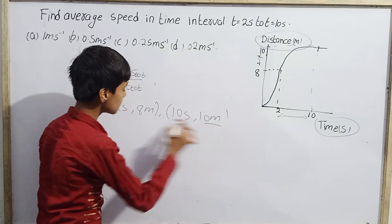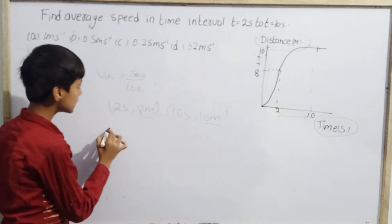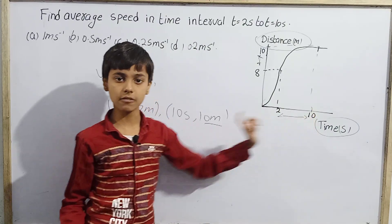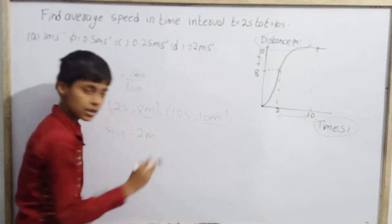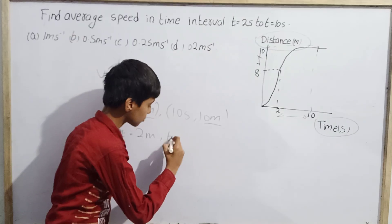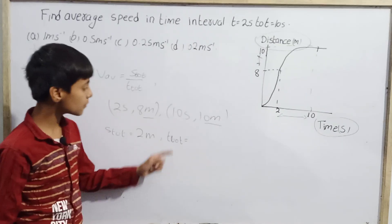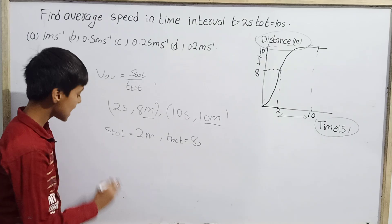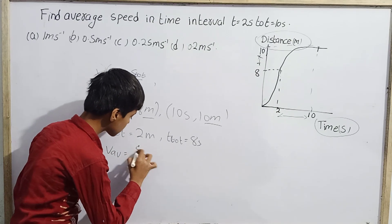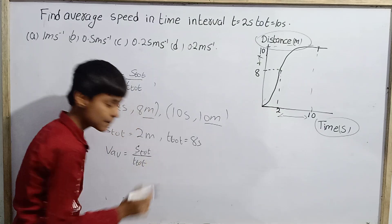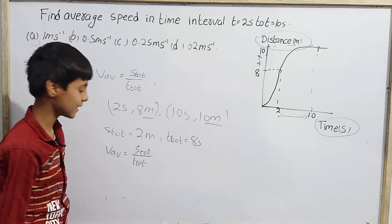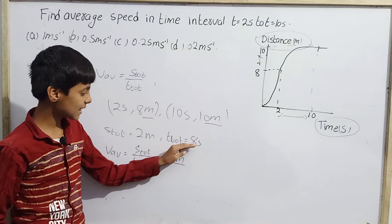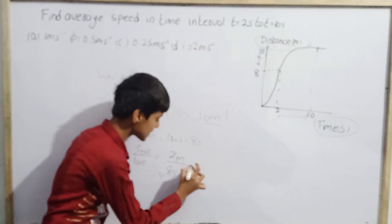The total distance covered from t = 2s to t = 10s is 10 − 8 = 2 meters. The total time taken is 10 − 2 = 8 seconds. So the average speed = total distance / total time = 2 meters / 8 seconds.